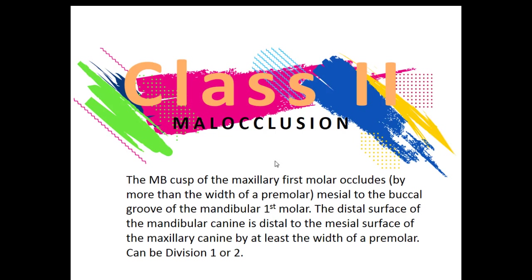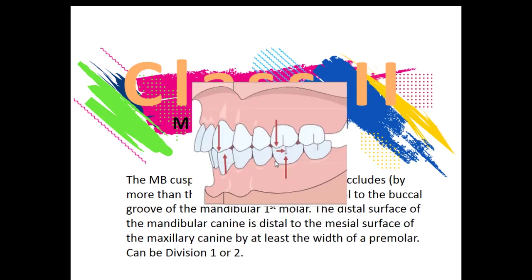Class 2 malocclusion is the most complicated of the three. The mesial buccal cusp of the maxillary first molar — visualize number 3 or 14 — is occluding by more than the width of a premolar mesial, so in front of the buccal groove of the mandibular first molar. You can see that number 14 here is mesial, in front of the buccal groove of number 19, by the width of a premolar.